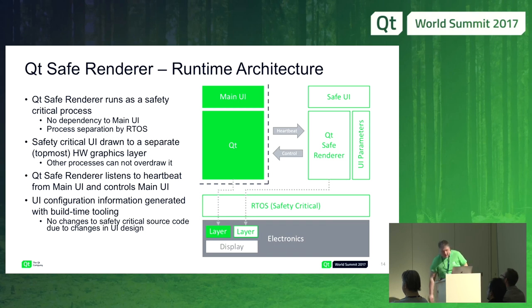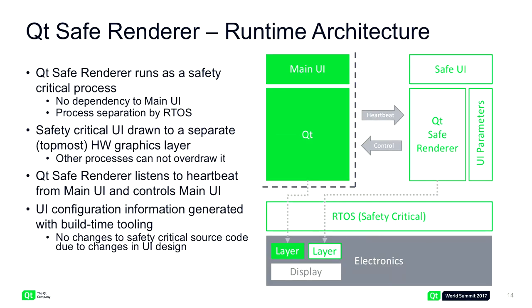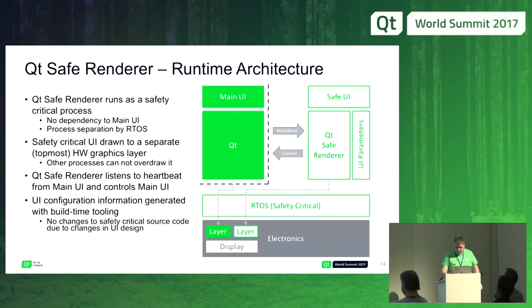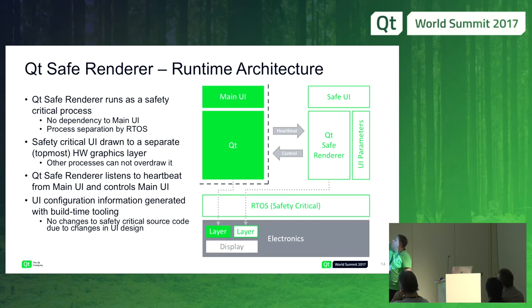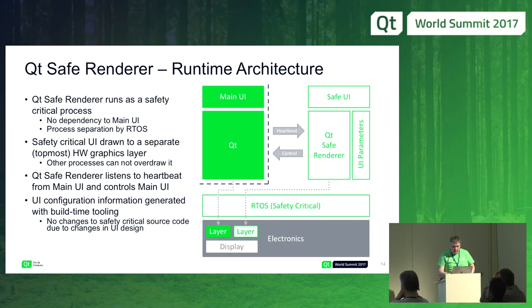Here's another architecture picture showing how it looks at runtime. The safe renderer part is on the safety side with no dependency to the main UI. It listens to heartbeat messages from the main UI and can control it. When the safe renderer renders, it is put to the topmost graphics layer, and other parts go to layers below. So even if the main UI draws whatever it wants, it can never draw over the safe renderer, because on the hardware side it is verified that this layer is always on top. The parameter file is exported from the tooling onto the safety-critical side, and the safe renderer reads and operates based on those parameters.